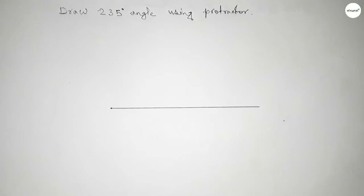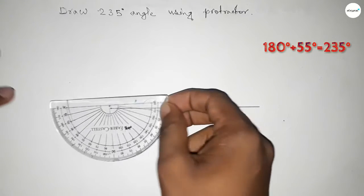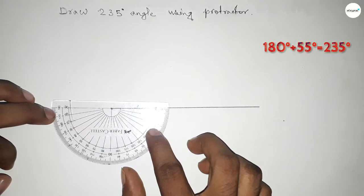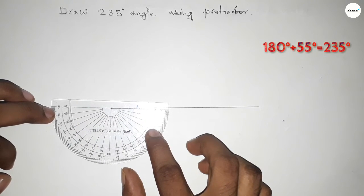So we have to add extra 55 degree angle. Now putting the protractor by this way.